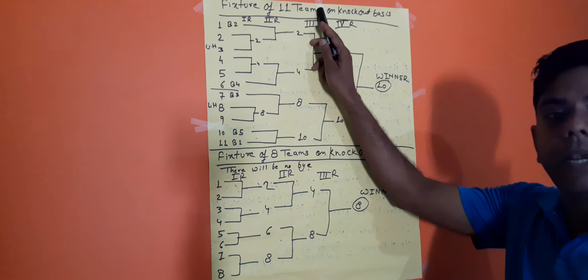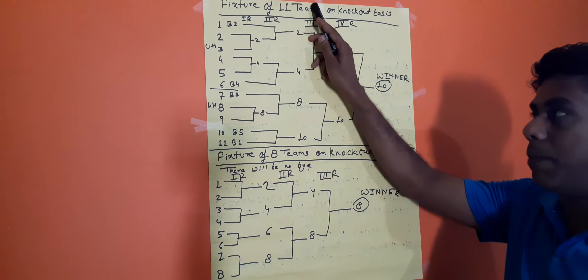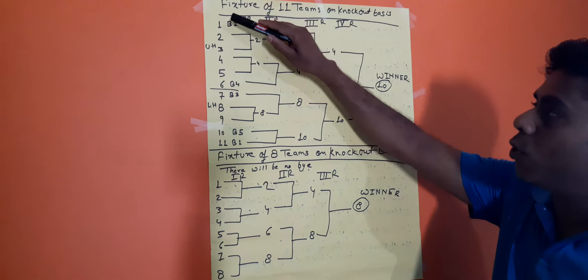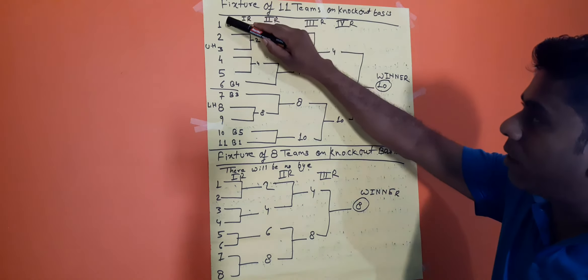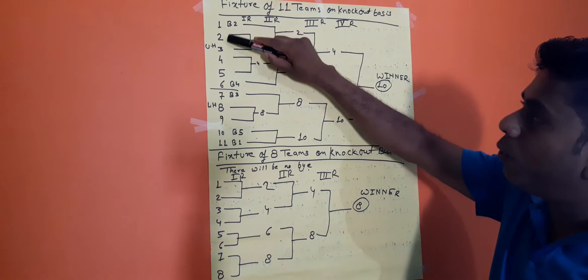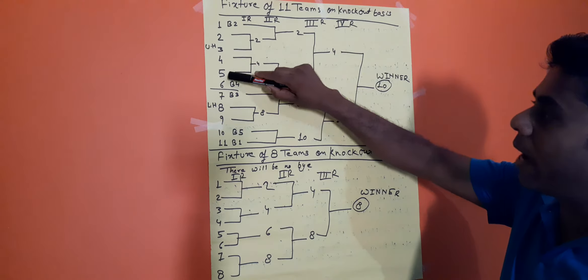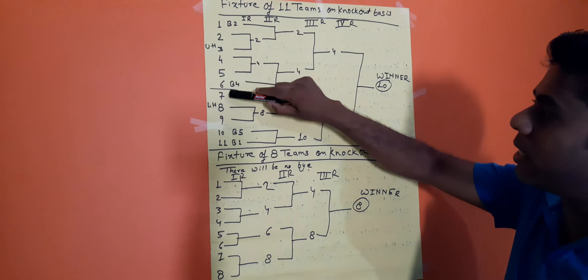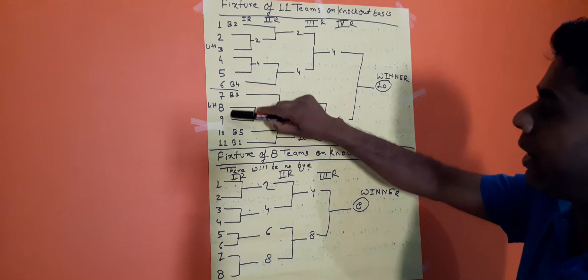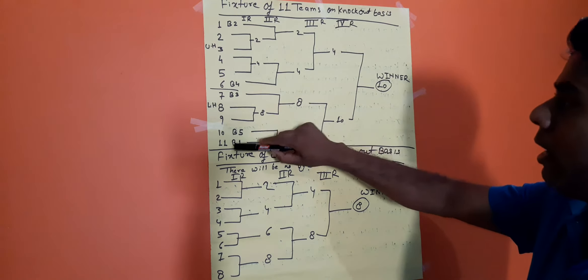Now we will make the fixture. 11 teams are participating, so we will draw the picture with positions 1, 2, 3, 4, 5, 6, 7, 8, 9, 10, 11.